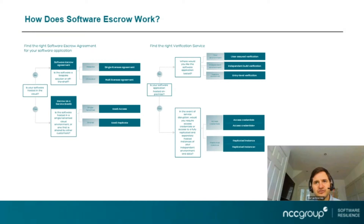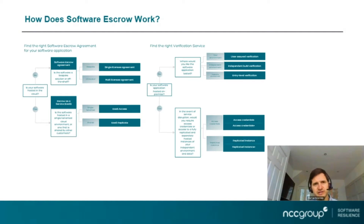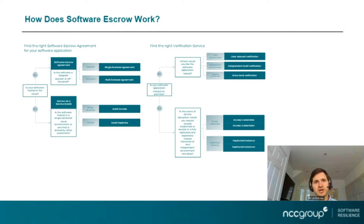Going back to software escrow, it's split really into two key areas, with lots of different variations under those two areas. You've got the legal element — the contractual part of software escrow — which gives customers or licensees on those agreements the ability to enact business continuity. And then you've got the verification or the technical consulting element, which essentially gives assurances around that continuity and making sure it can be utilised in that stressed exit scenario.